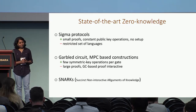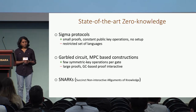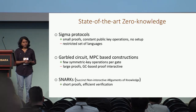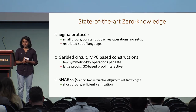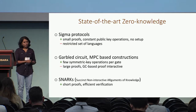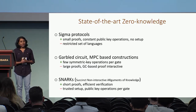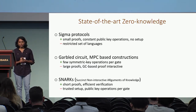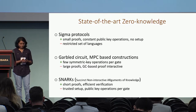Then we have succinct non-interactive arguments of knowledge, also called SNARKs. They allow for very short proofs and efficient verification, but they rely on a trusted setup, and they also require a prover public key operations per gate in the circuit.